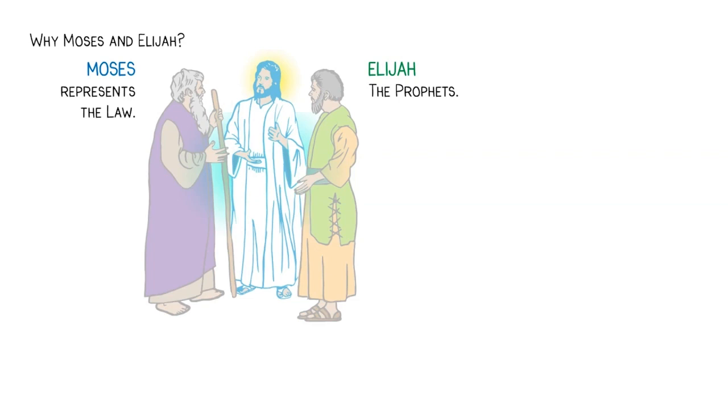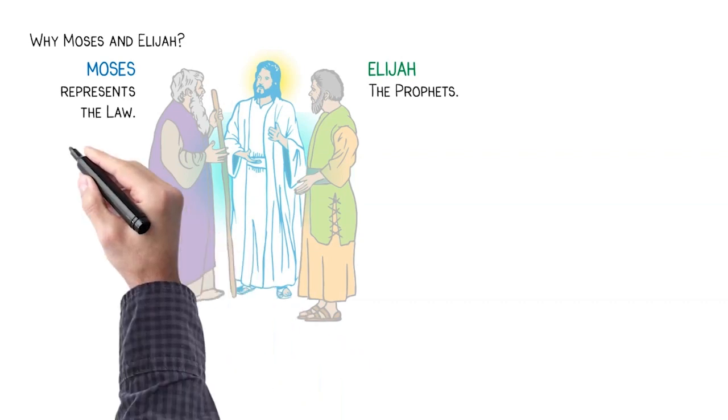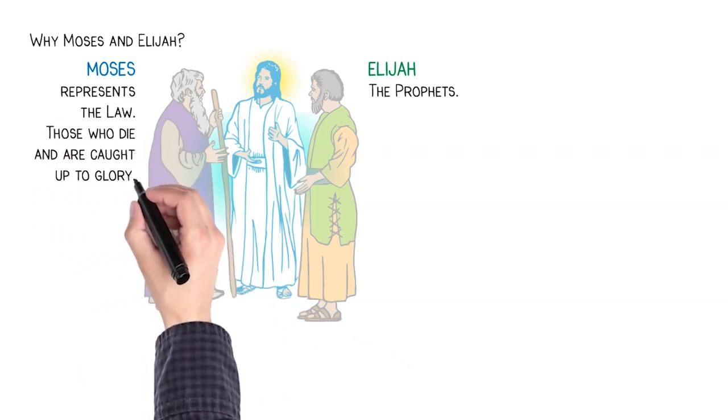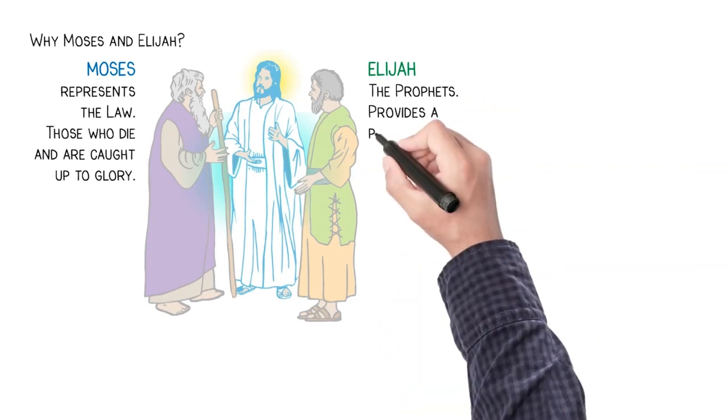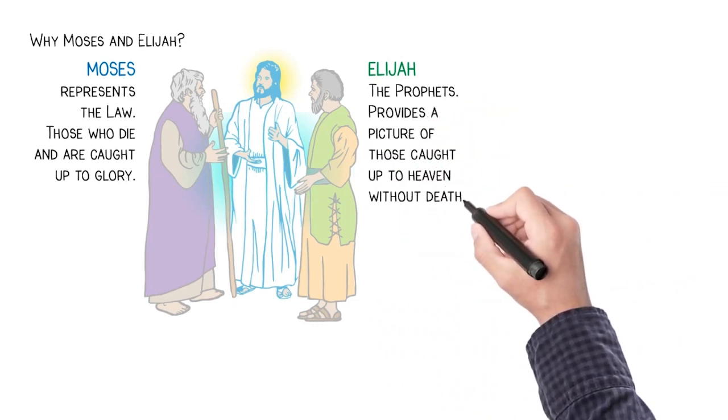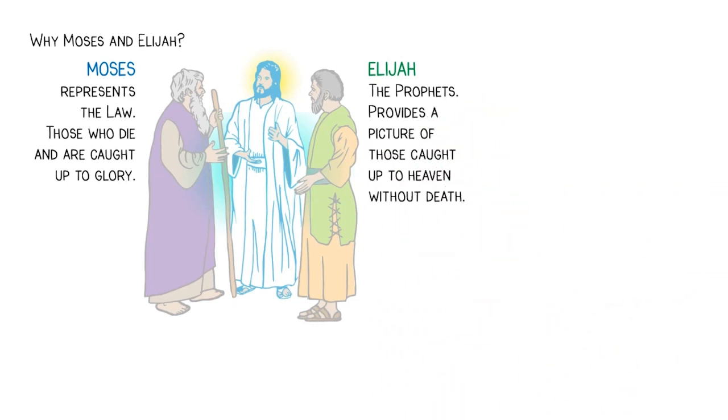Also, could it be that these two men illustrate God's people caught up to himself? Moses representing those who die and are caught up to glory, while Elijah provides a picture of those caught up to heaven without death, as what we look forward to in the rapture.